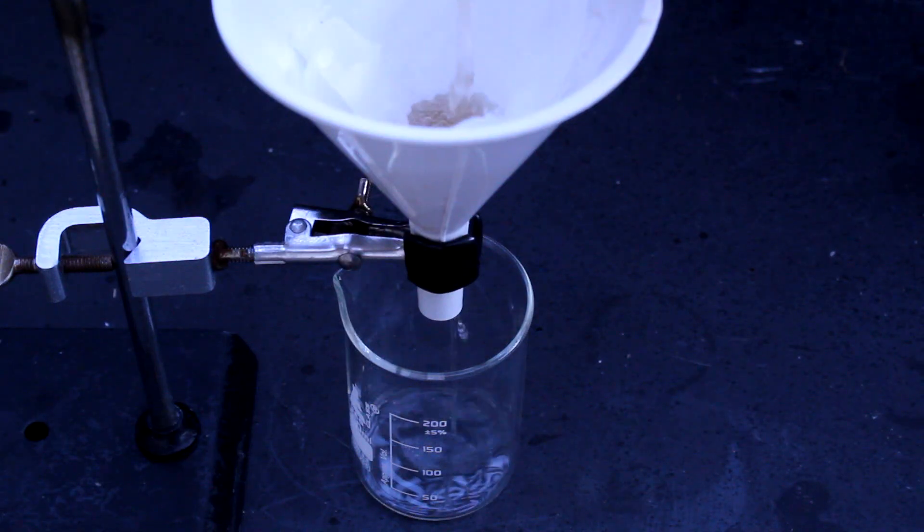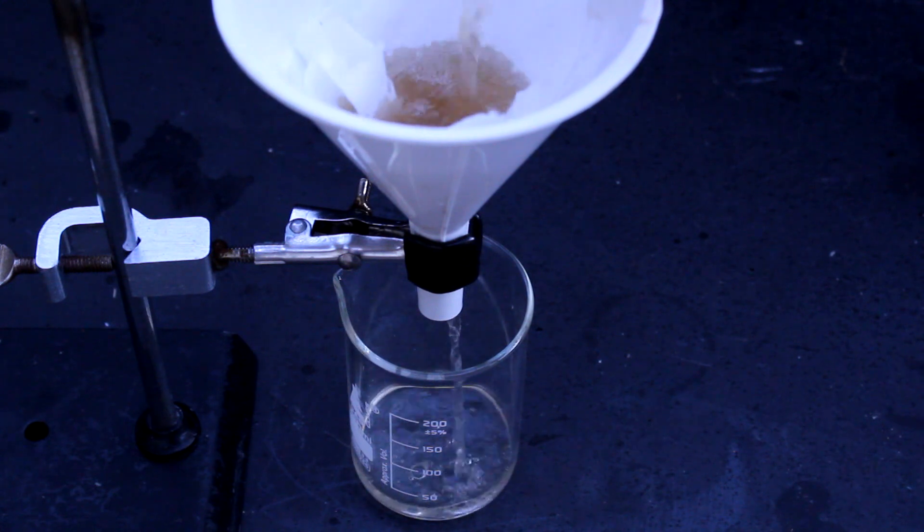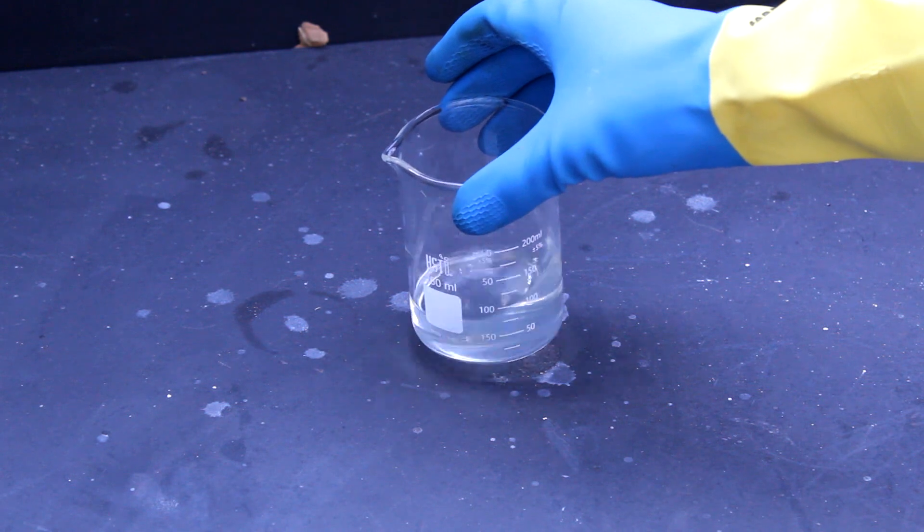Once the sodium silicate is dissolved, filter the solution a few times to remove any unreacted glass or contaminants. In the end, we are left with a clear solution of sodium silicate in water.